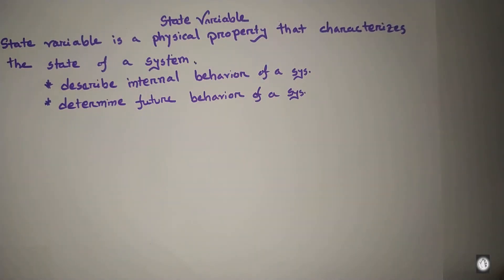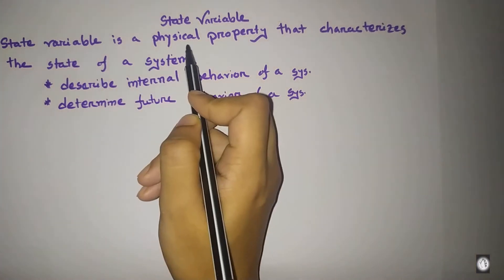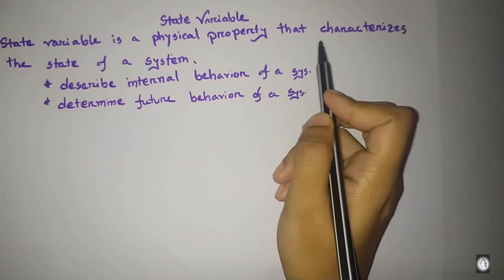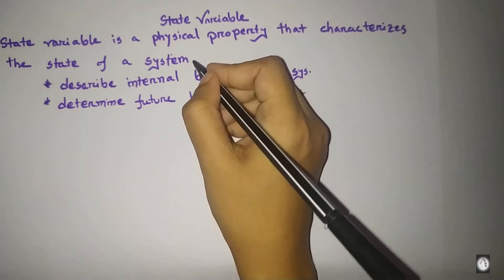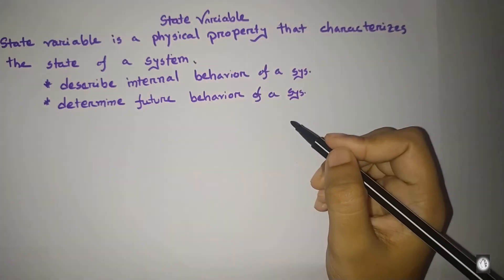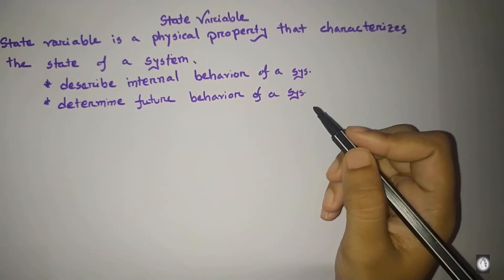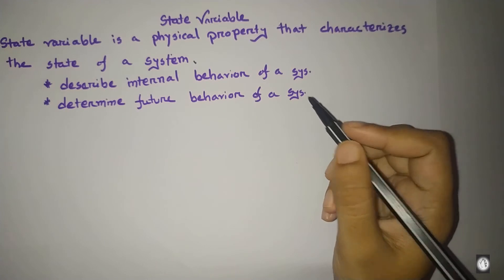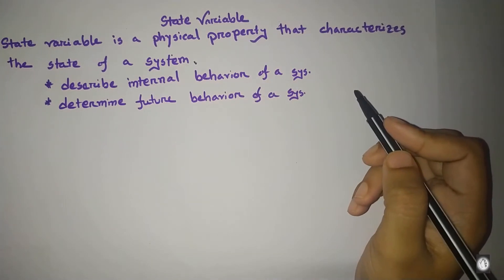Welcome to our channel. In this video, I will be able to know the state variable. The definition of state variable is a physical property that characterizes the state of a system. When we analyze the state of a system, we will be able to activate state variable analysis by state space analysis.